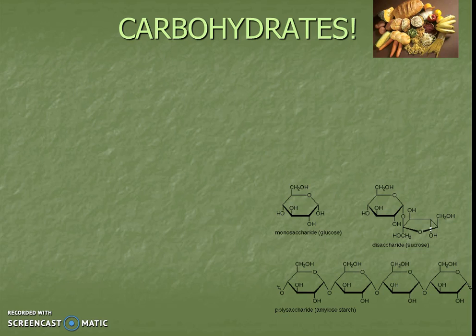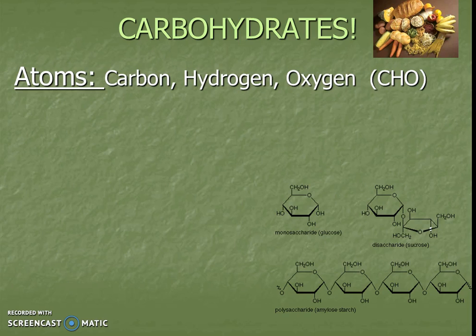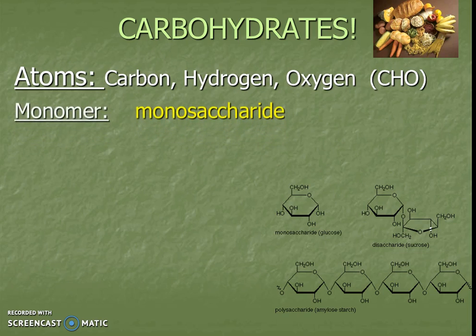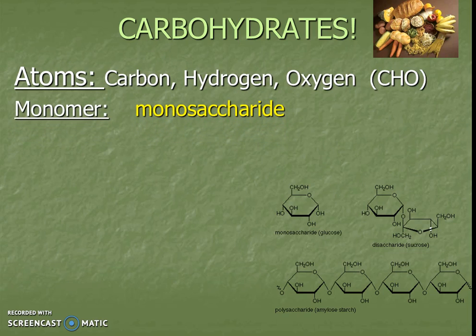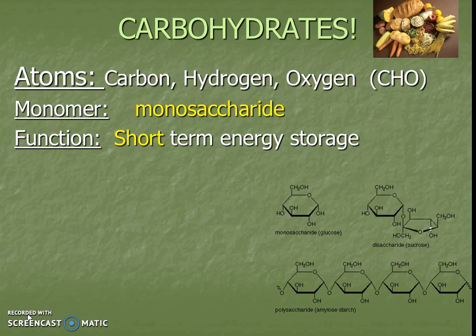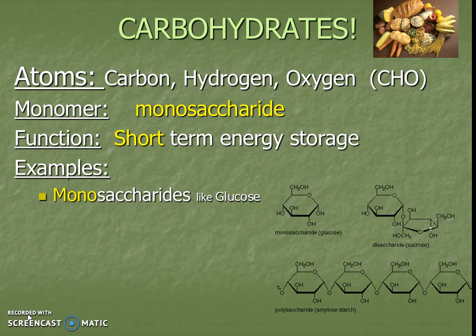Carbohydrates — we've talked about the fact that they're made of atoms. The carbohydrate is a big macromolecule made up of carbon, hydrogen, and oxygen, which we abbreviate as CHO. Its monomer is called a monosaccharide, meaning one sugar. The major function of carbohydrates is short-term energy storage. An example of a monosaccharide is glucose, which looks like this.